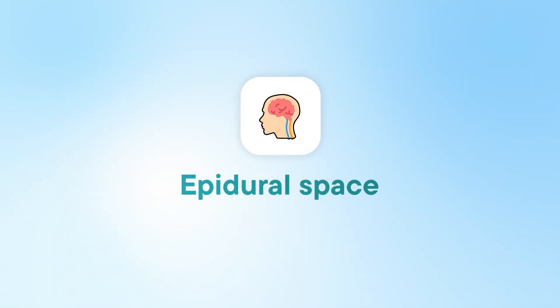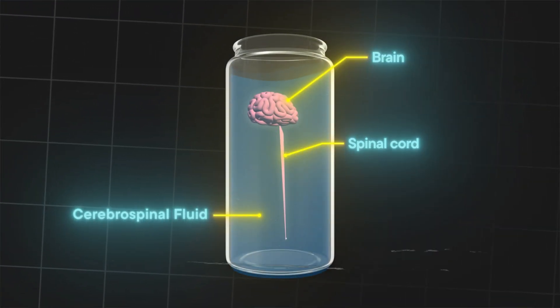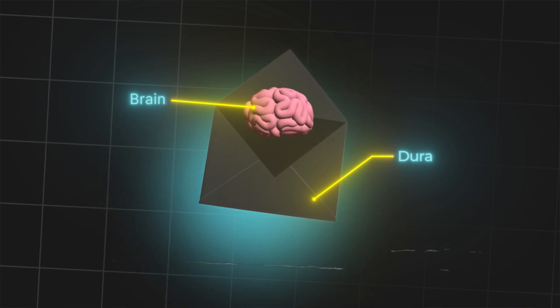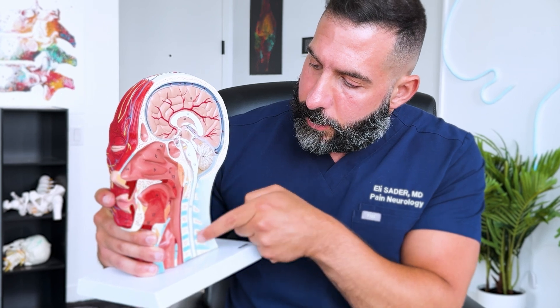To understand what the epidural space is, let's refer to this model. The brain and spinal cord are essentially swimming in a fluid called the cerebrospinal fluid, and all of those are enclosed in meninges, which is like an envelope. Imagine a letter inside an envelope — the brain is the letter and the envelope is the meninges or dura. Outside of this dura is where you have the epidural space, also known as the extradural space — outside of where the brain and spinal cord are.